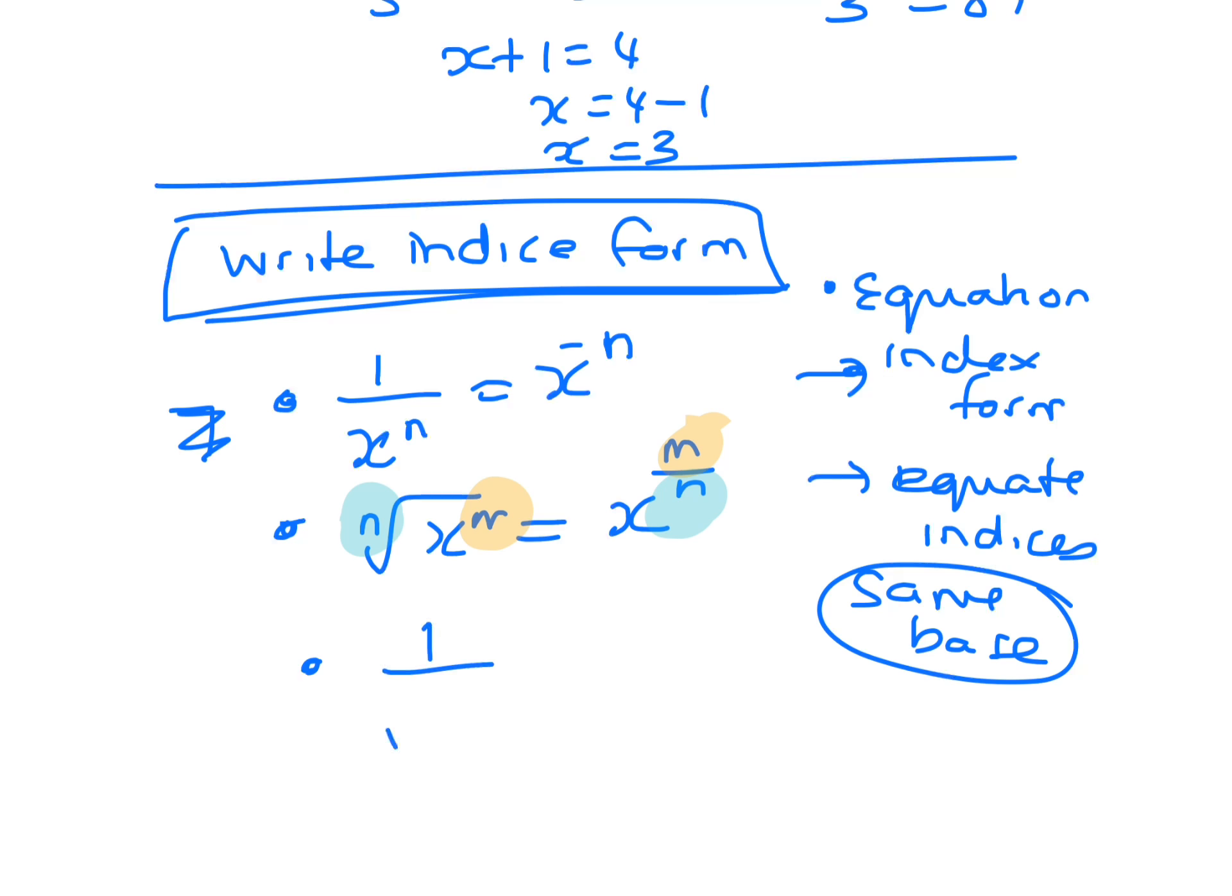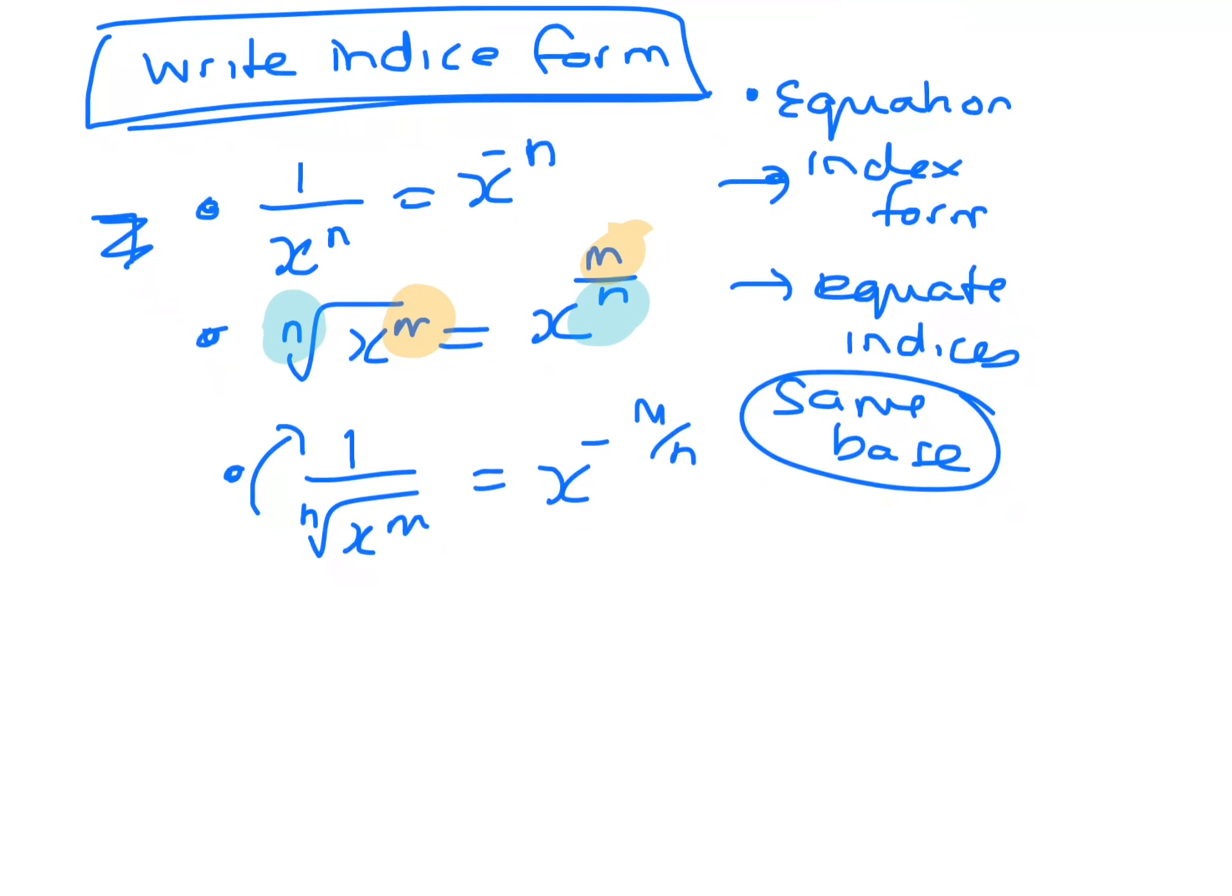Even if we had the nth root of 1 over x to the m, that would be to the minus m over n, because you've got to bring it up and then you're just putting it into index form. So let's just say we just make these equations a little bit harder.